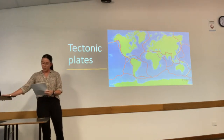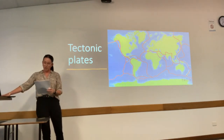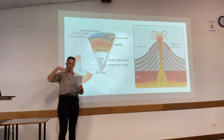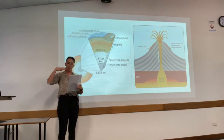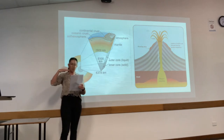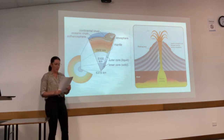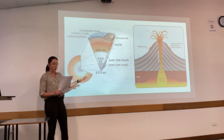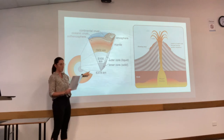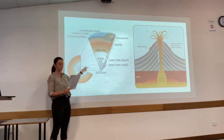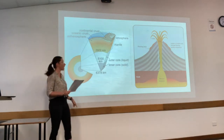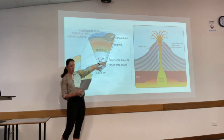Tectonic plates lie on top of the asthenosphere, a layer of hot, weak rock in the upper mantle. Rock from the subducted plates melts to form molten magma, which pushes its way towards the surface, forming a magma chamber, just like over here.